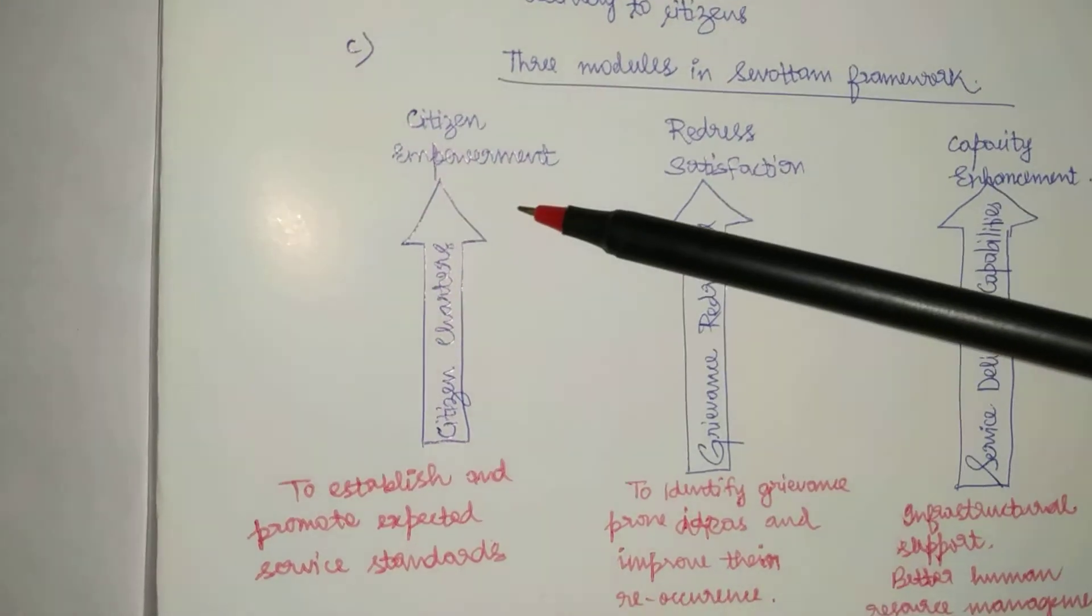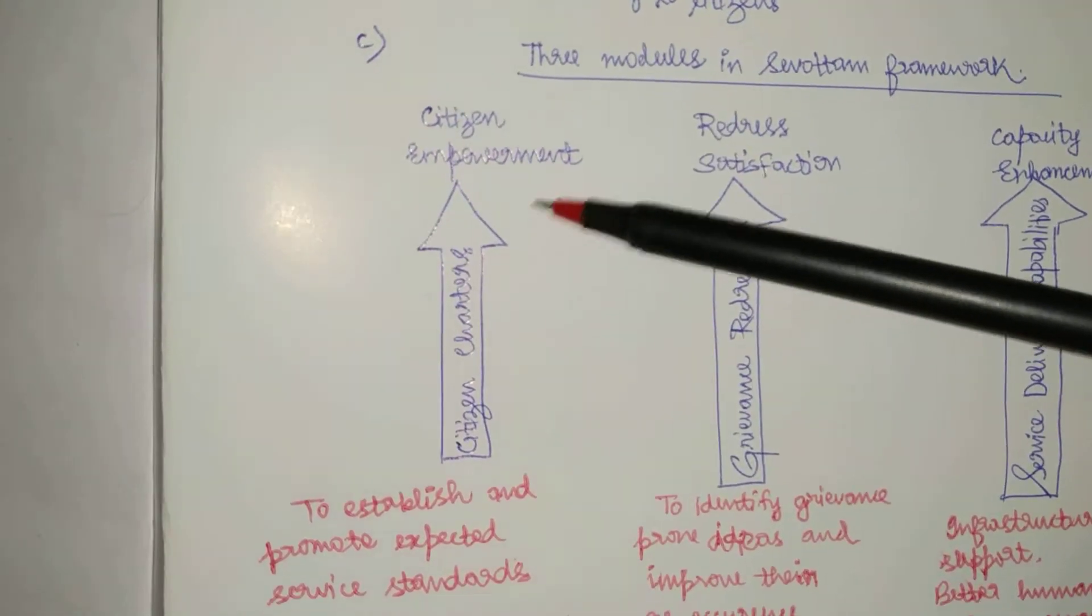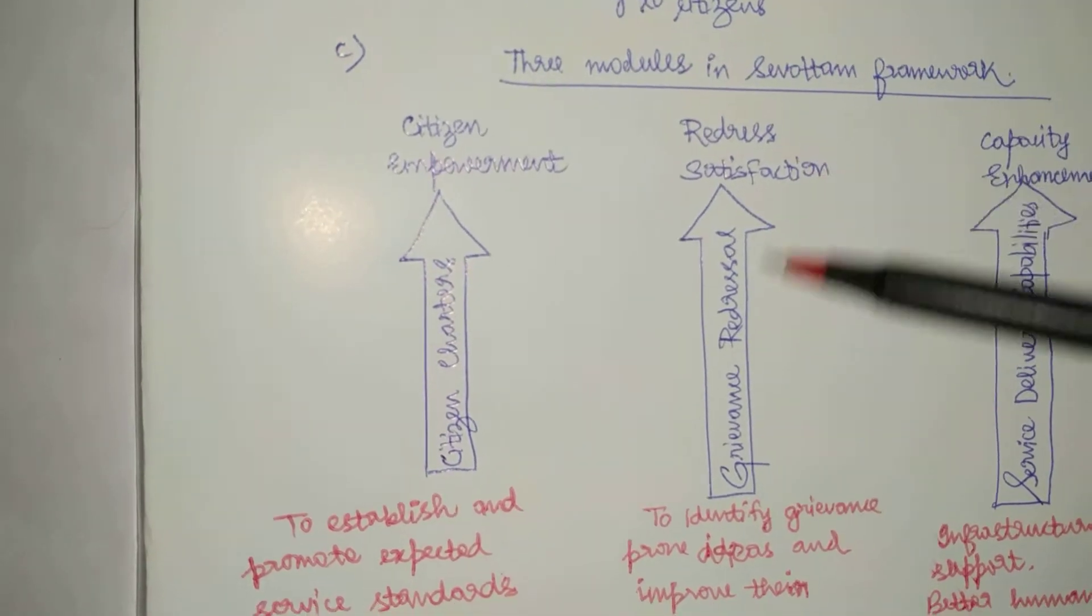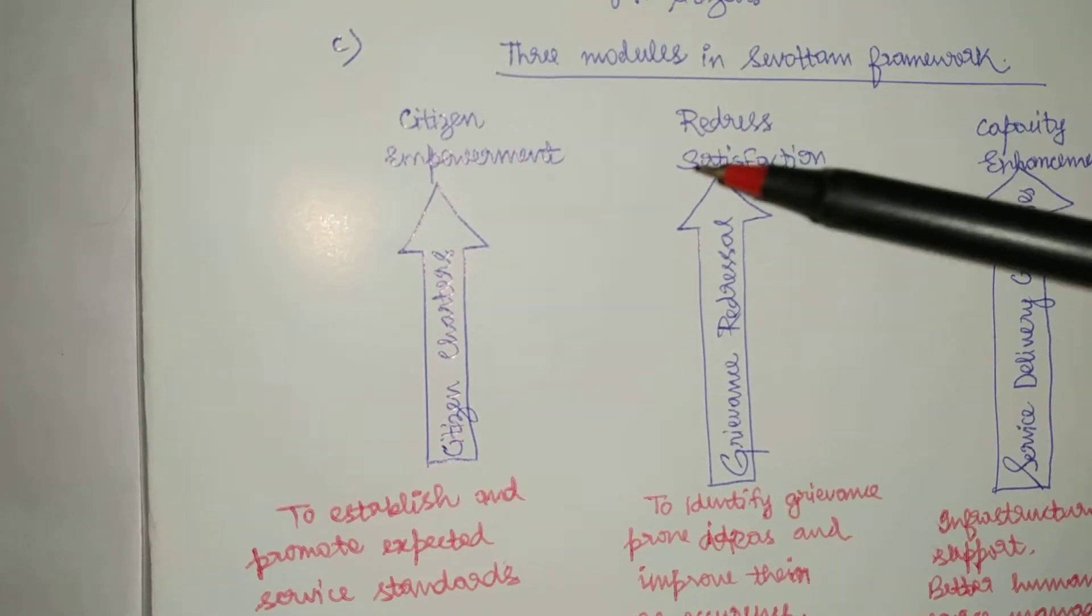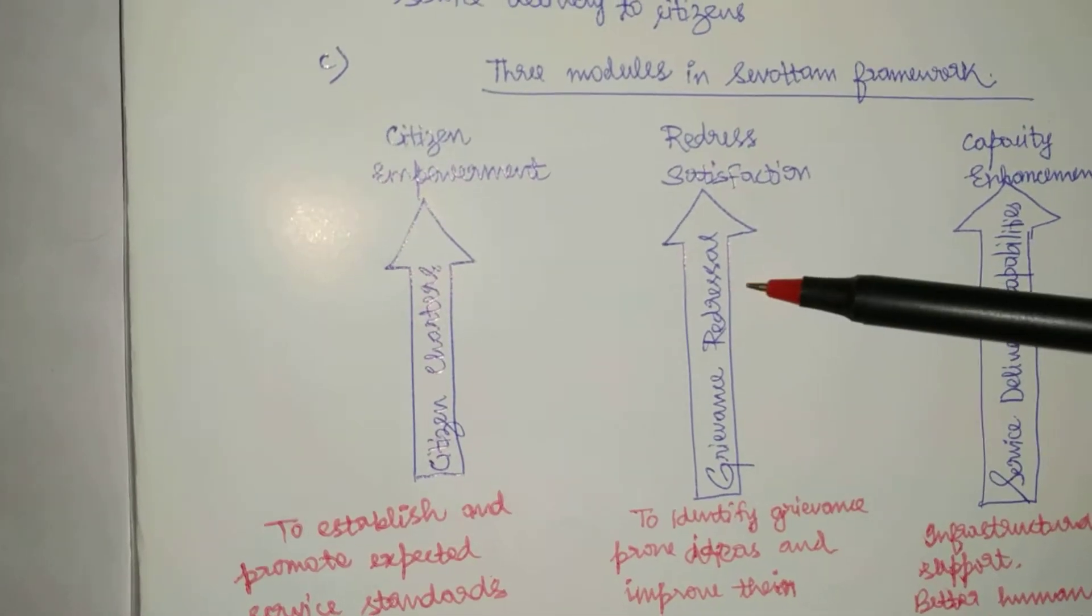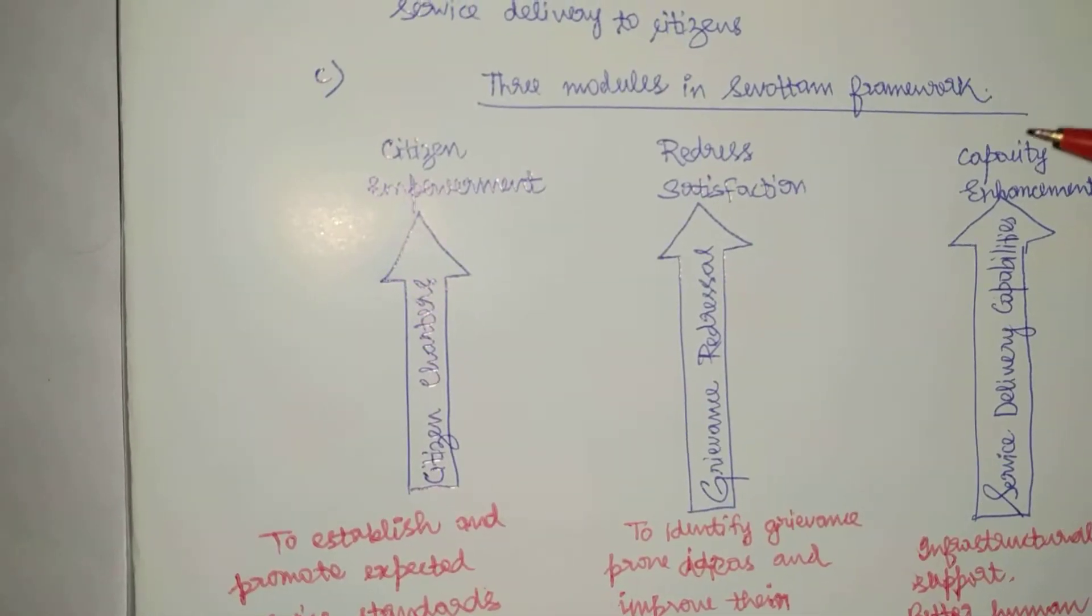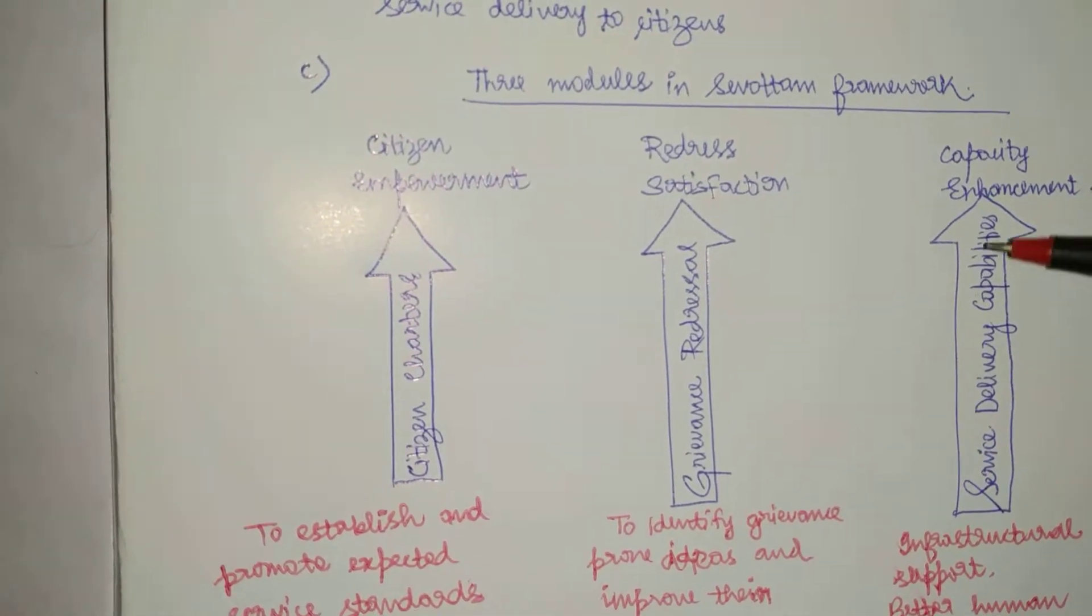First is the citizen empowerment via citizen charters. Second is to redress the satisfaction via grievance redress and third is the capacity enhancement via service delivery capabilities.